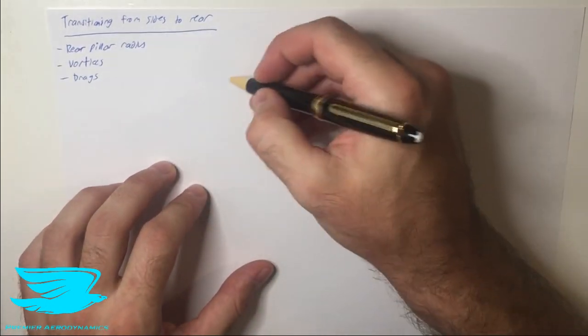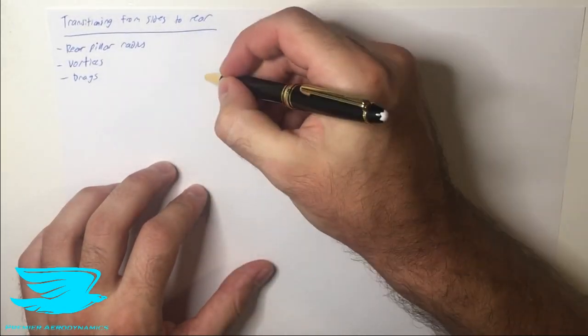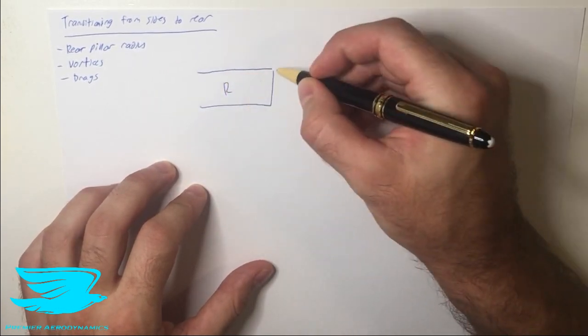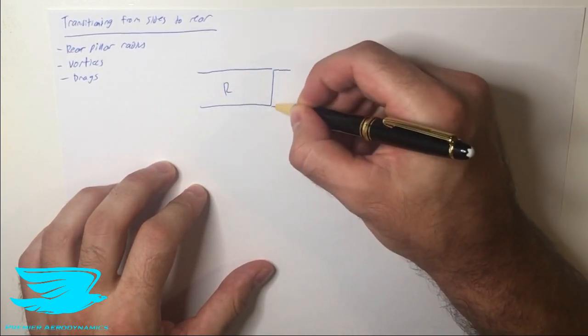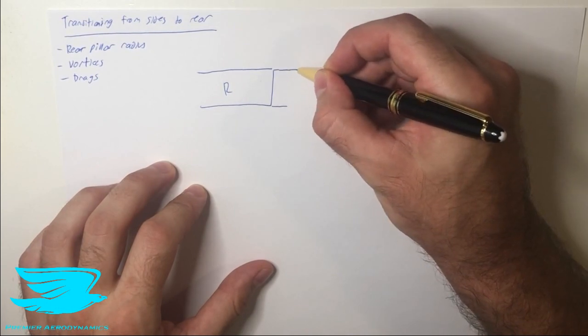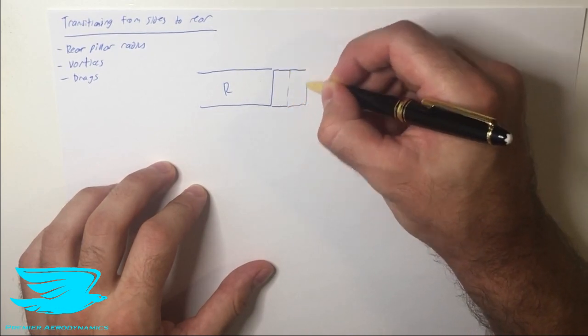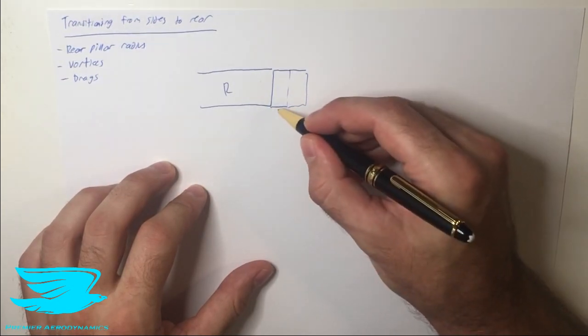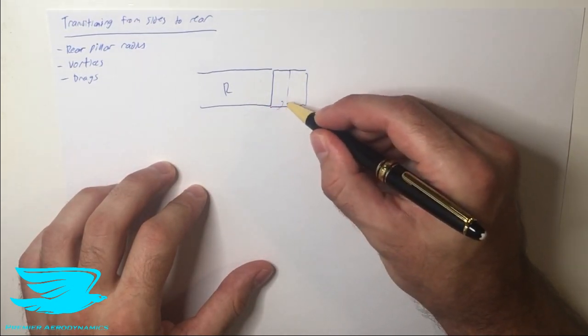Let's talk about what we're looking at. Let's say we have a top view of a car. We have the roof here, then we have the window, the back window here, and then we might have the boot or the trunk. We have windows around the sides and we have to transition from the sides all the way to the back.